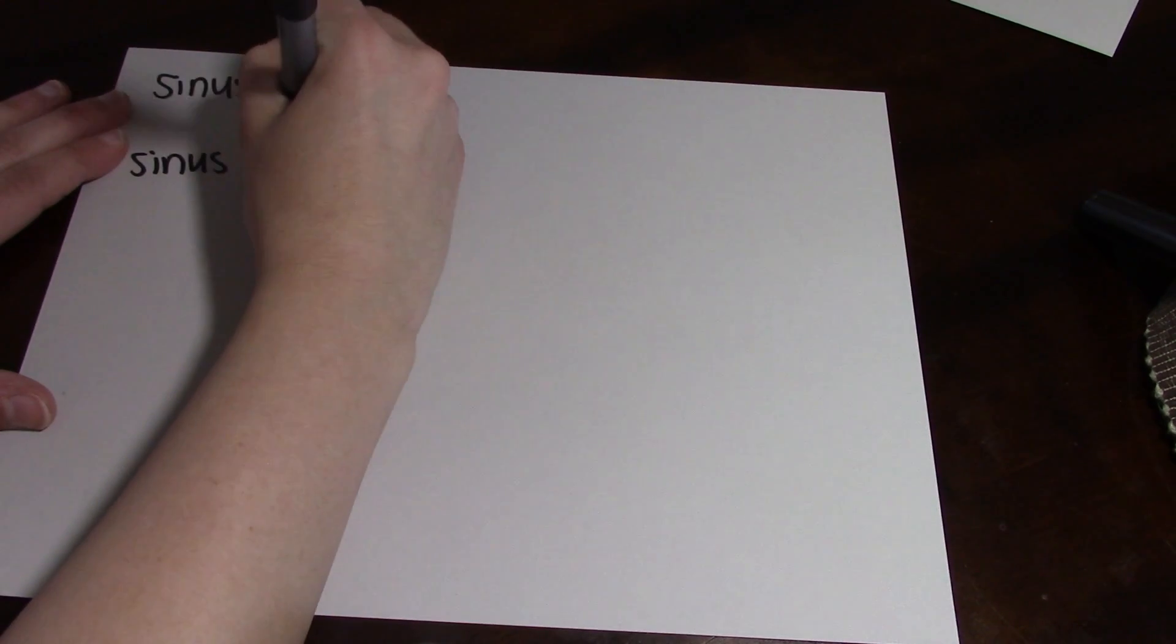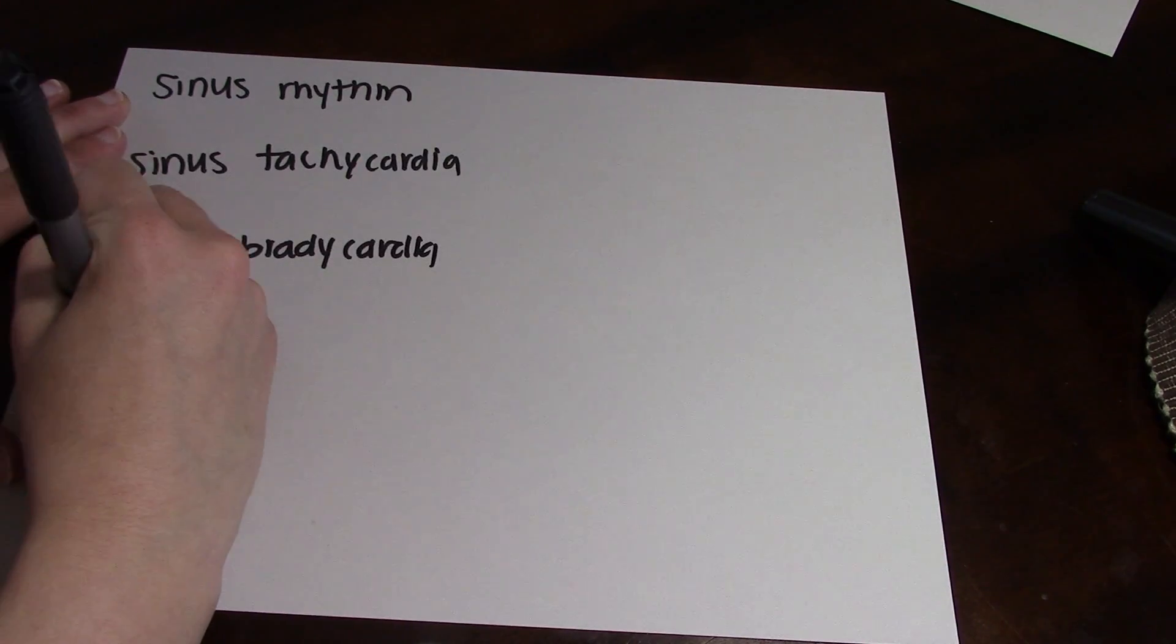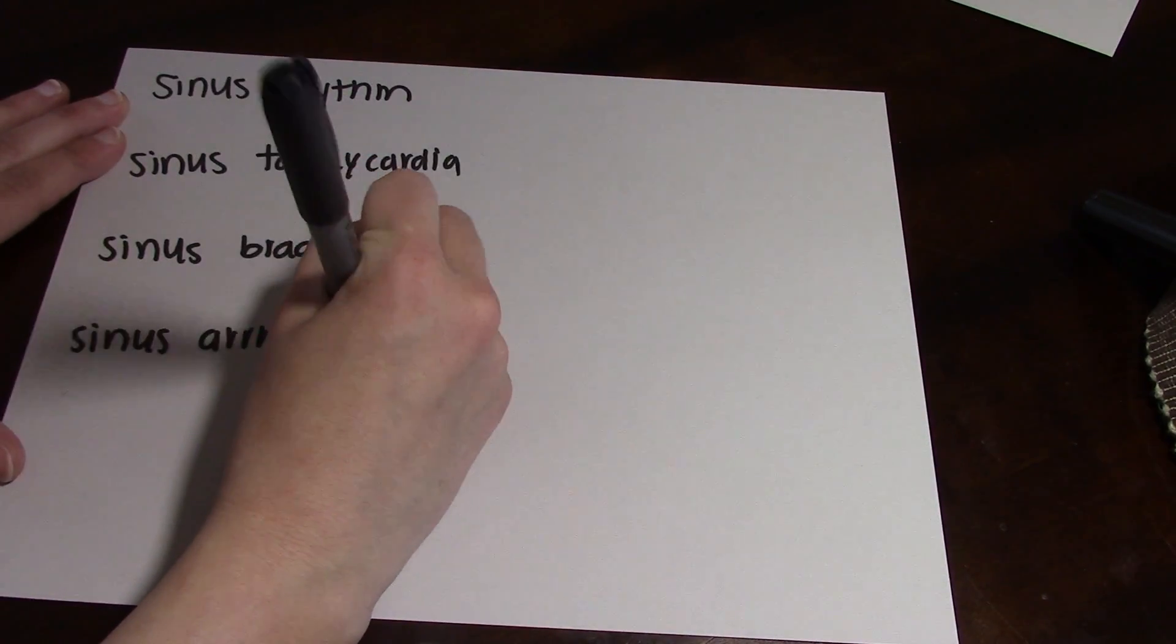And just to recap all on one page, a sinus rhythm is between 60 and 100 beats per minute. It has a normal R to R and for every P wave there is a QRS.